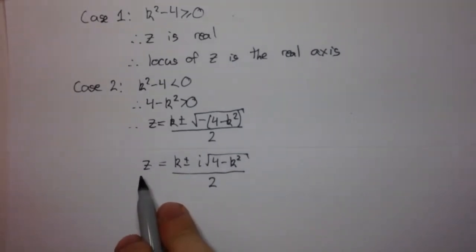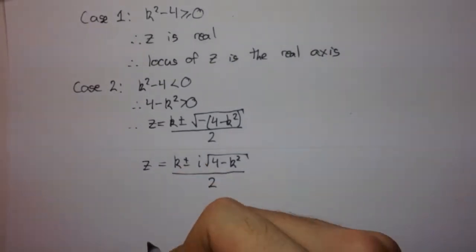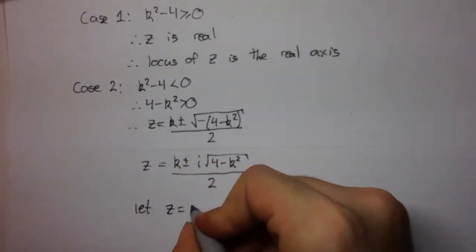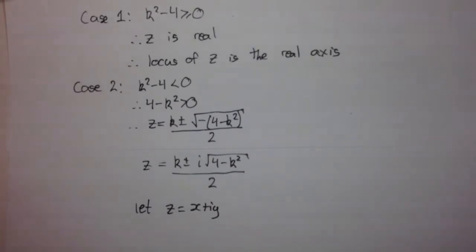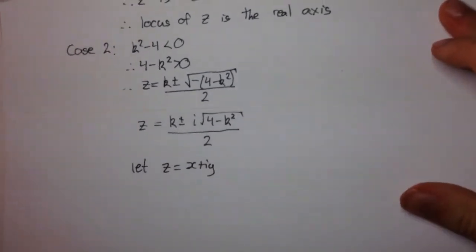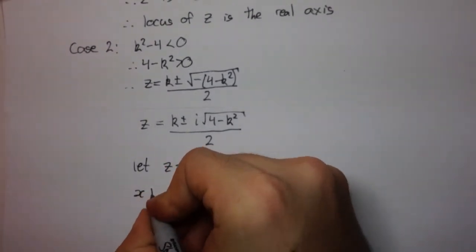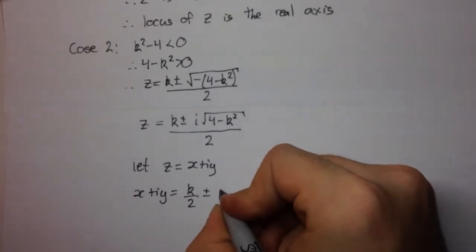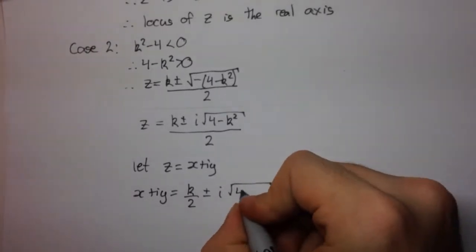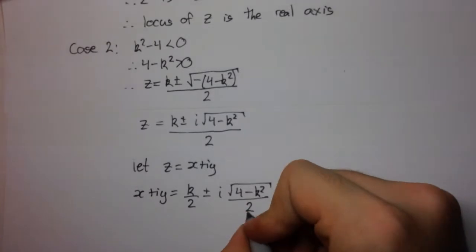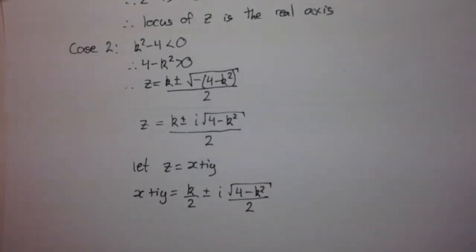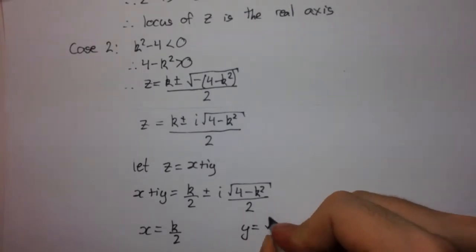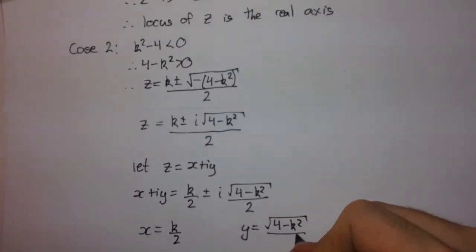But, since z is some arbitrary complex number, we can say let z equal x plus iy. So, if z equals x plus iy, then x plus iy is equal to k divided by 2 plus or minus i times the square root of 4 minus k squared divided by 2. And so, we can equate the real and imaginary parts. We're going to get x equals k over 2 and y equals the square root of 4 minus k squared over 2.